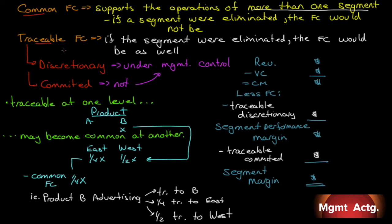Now traceable can be broken down into two other categories. It's discretionary and committed. And discretionary traceable fixed costs are under manager's control or under management's control. Committed, I just put the word not. Not under management control. So one is, one is not.